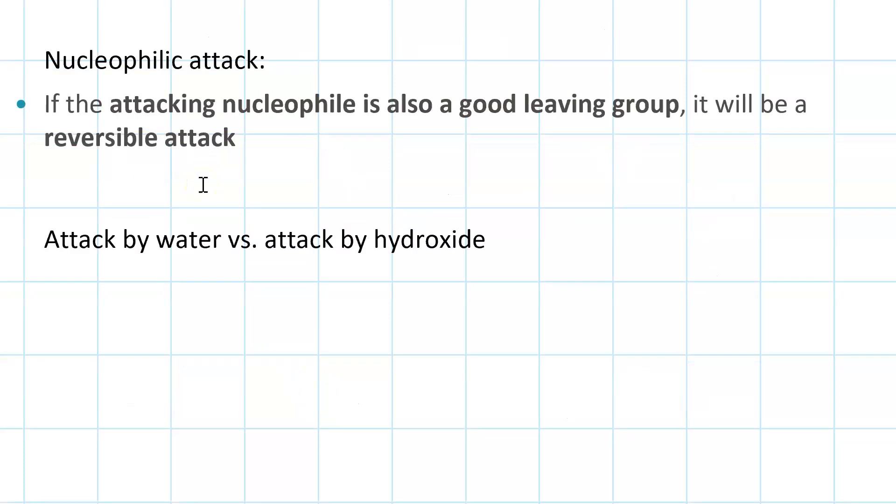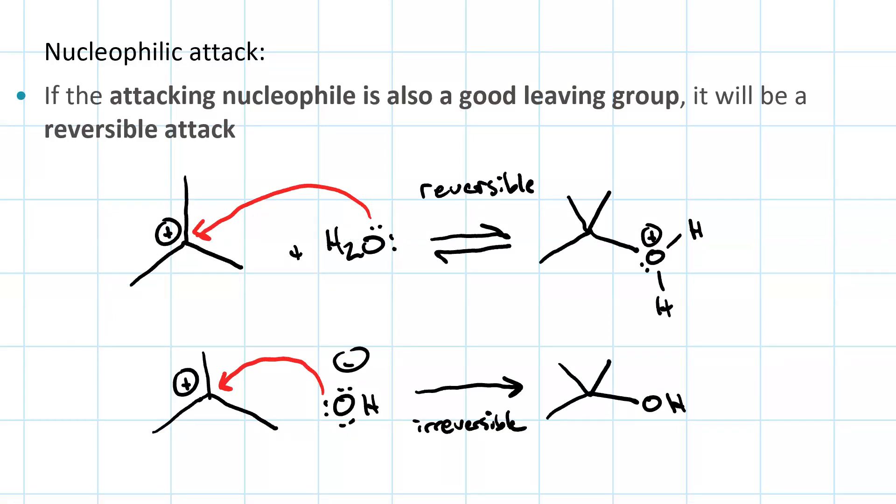Nucleophilic attack. Nucleophilic attack is reversible when the nucleophile is also a good leaving group. This goes back to the example I just showed. If water is your nucleophile, well, water is a good leaving group. So we could just as easily draw this curved arrow which would take us back to the reactant side.